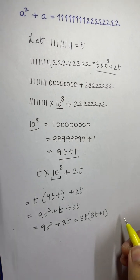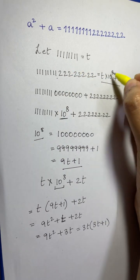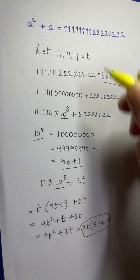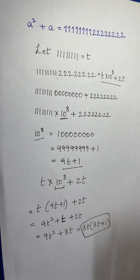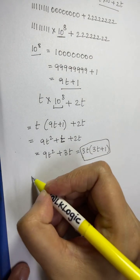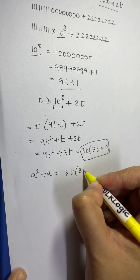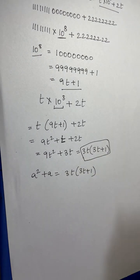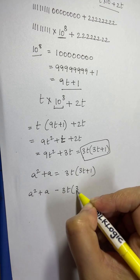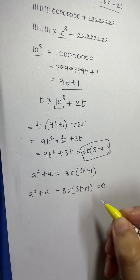Now what's our original equation? a² + a equals this right-hand side we just simplified. So we have a² + a = 3t(3t + 1). Bringing everything to one side: a² + a − 3t(3t + 1) = 0. How do we factorize this?